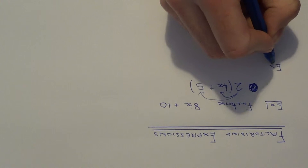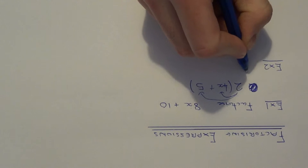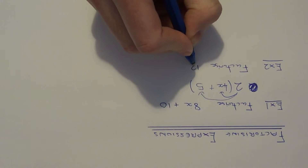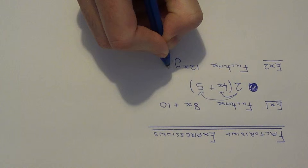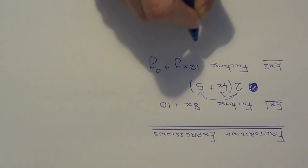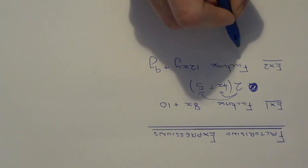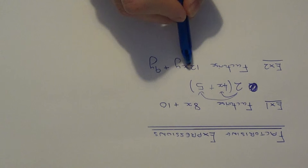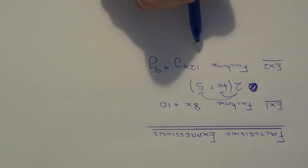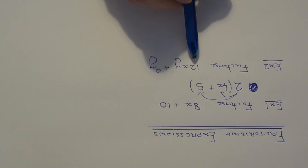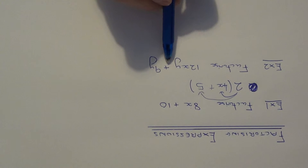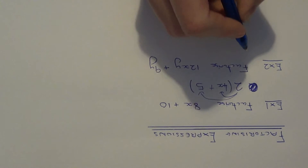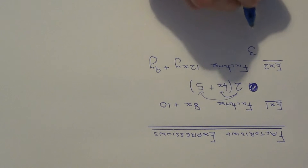Let's do a different one. Example 2: let's factorise 12xy plus 9y. Again, first of all look for the highest common factor of the numbers in both terms. The highest common factor this time is 3, because 3 is the biggest number which divides into 12 and 9. So this can go at the start of the bracket.